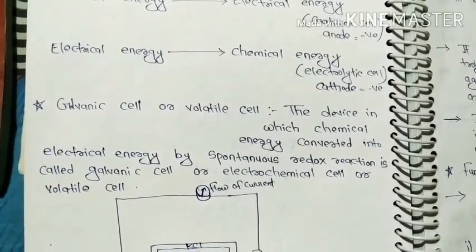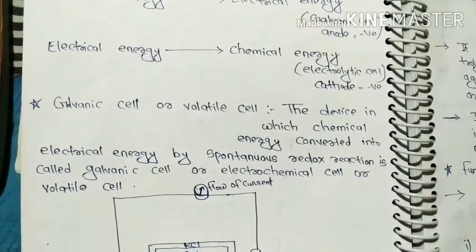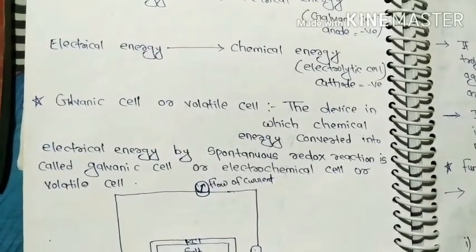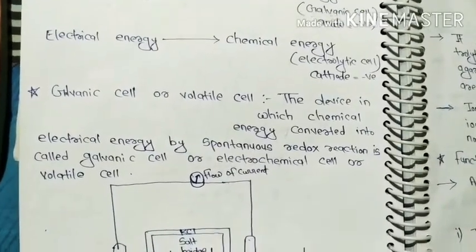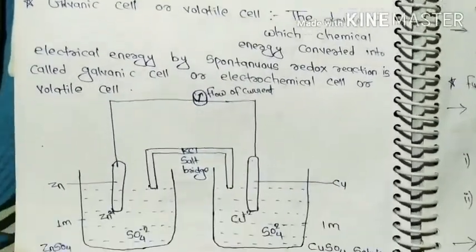Spontaneous means it happens by itself and redox reaction means oxidation and reduction. So this is a reaction that happens by itself. Let's see here.